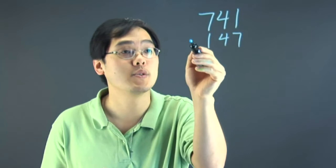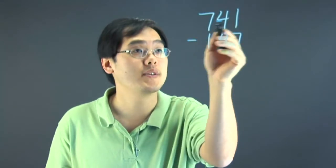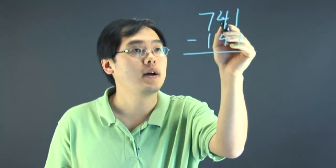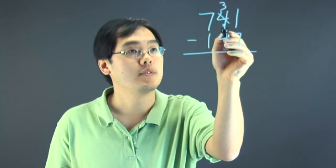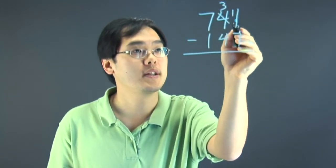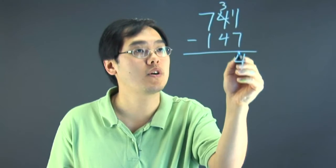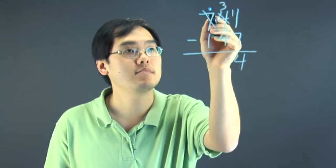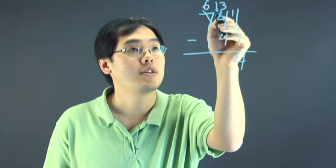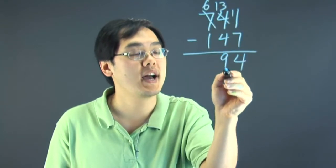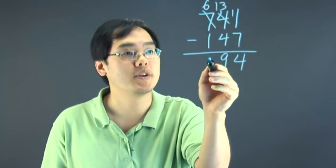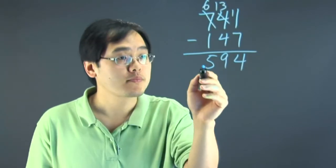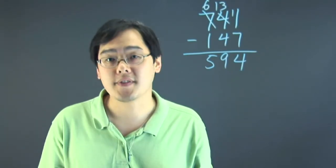And what you want to do with that is subtract. So 741 minus 147 — this is fairly basic. I've got to borrow from the 4, get 3. 11 minus 7 is going to give you 4. 3 subtract 4, you've got to borrow from the 7. You have 6, so 13. 13 minus 4 is 9. And 6 minus 1 is going to give you 5. The number you have here is 594.